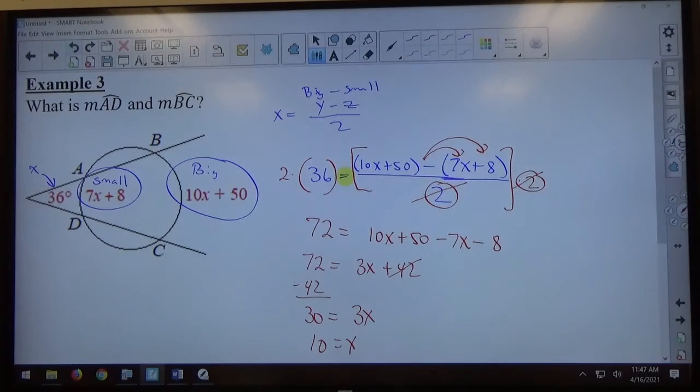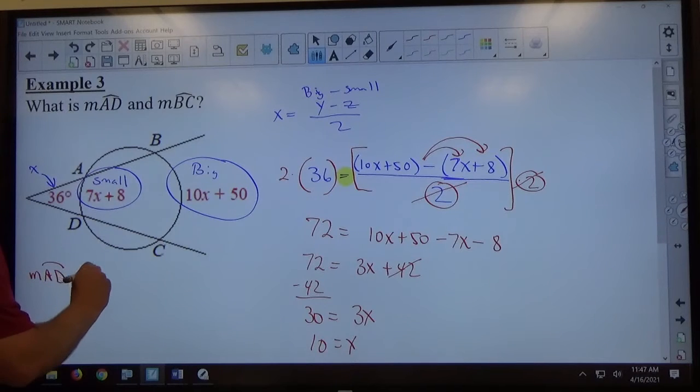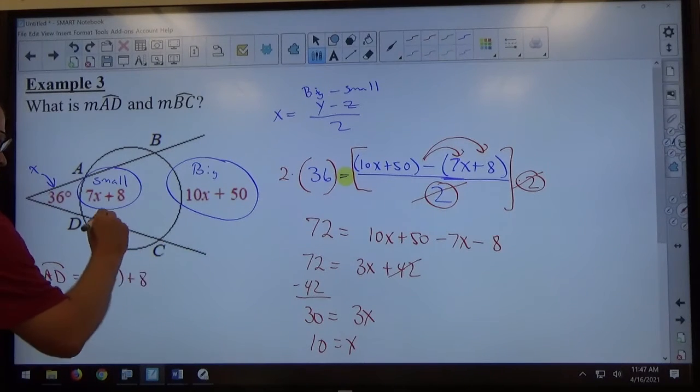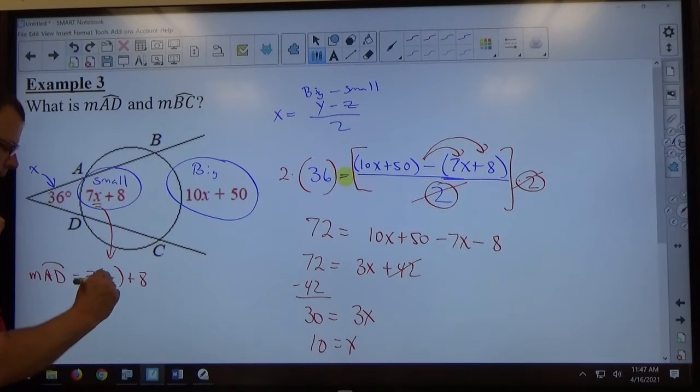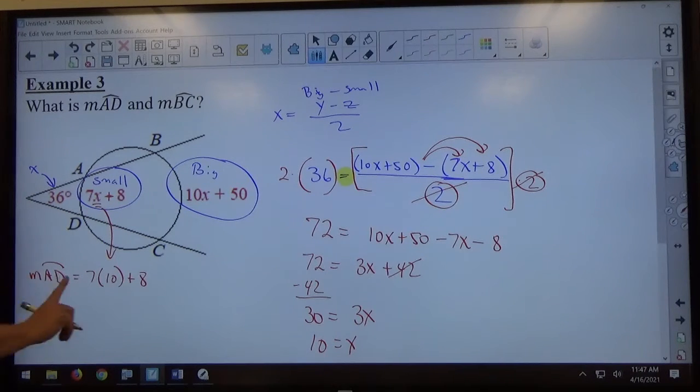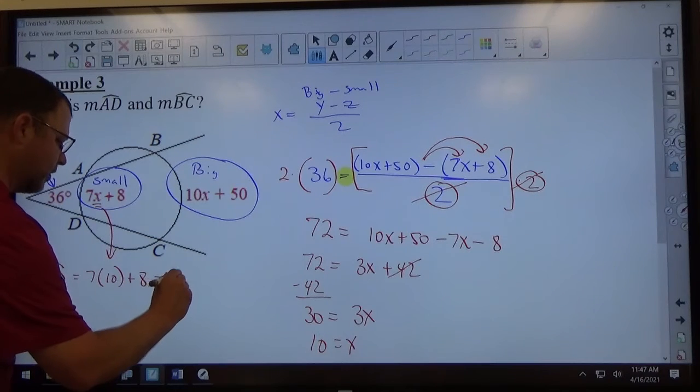Now, if it said find x, I'm done. But it says what is measure of AD and measure of BC? Well, AD, measure of AD is 7x plus 8, right? There's AD. x equals 10. So 70 plus 8 is 78 degrees.